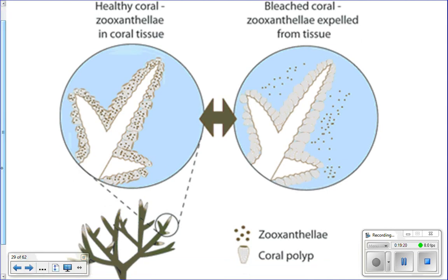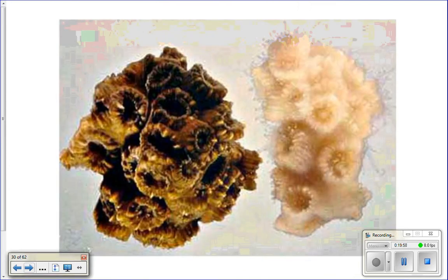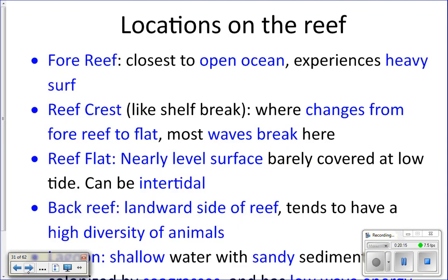Bleaching is when corals expel their zooxanthellae. In a healthy coral, you have the skeleton underneath, the coral animal tissue above it, and the green zooxanthellae inside the tissue. When bleaching occurs, the coral kicks out the zooxanthellae, leaving a clear animal over a white skeleton — it looks bleached. Here's an actual picture: it literally looks like the coral was dipped in bleach. Corals can re-uptake zooxanthellae if the water temperature goes back down, but not always.